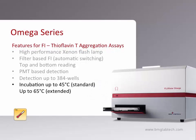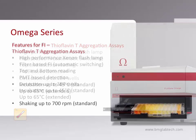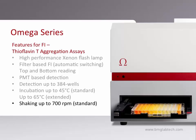The final basic need for performing thioflavin T assays is achieved in the Omega with a photomultiplier tube for sensitive detection of emission light. The ability to control temperature appears to be quite important in the RT-QUIC assay, and BMG has standard temperature regulation up to 45 degrees Celsius in all our readers, or you can choose optional extended incubation up to 65 degrees. Another important factor in successful RT-QUIC assays is robust shaking, and the transport system of the Omega appears quite well suited to this task.